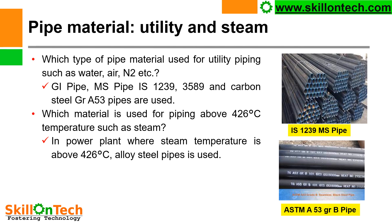Pipe material for utility and steam — you can see a picture of IS-1239 MS pipe and ASTM A53 grade B pipe. For utility piping such as water, air, and nitrogen, GI pipes, MS pipe IS-1239, IS-3589, and carbon steel A53 pipes are generally used. Which material is used for piping above 426°C, such as steam in a power plant? Where steam temperature is above 426°C, A106 grade B or ASTM A53 grade B pipe can be used.